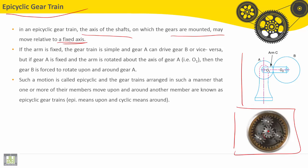If the arm is fixed, the gear train is simple and gear A can drive gear B and vice versa. If this arm is fixed, gear A rotates and drives gear B.